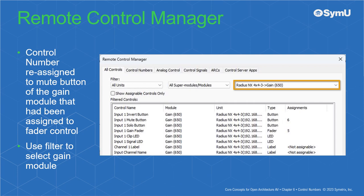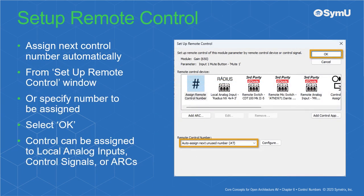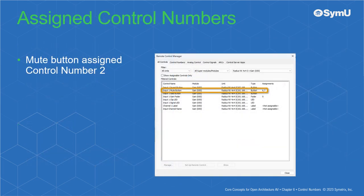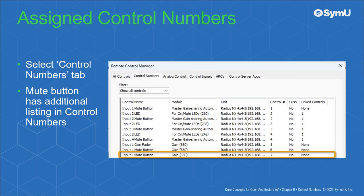Use the filter to select the gain module. Select the input 1 mute button from the list and select Setup Remote Control. Assign the next control number automatically from the Setup Remote Control window, or specify the number to be assigned, then select OK. Control can also be assigned to local analog inputs, control signals, or arcs from this window. The mute button has now been assigned control number 2. Select the Control Numbers tab — the mute button now has an additional listing in control numbers.